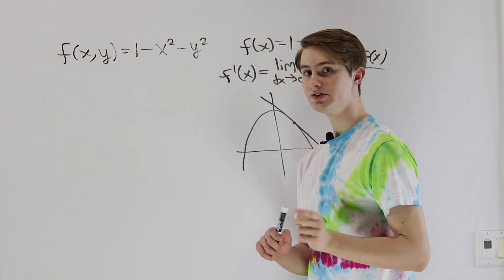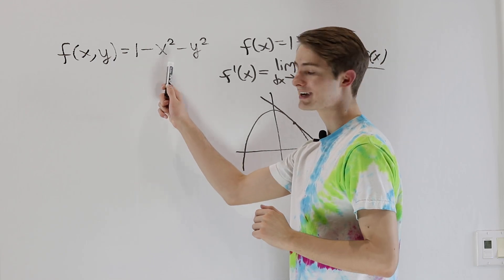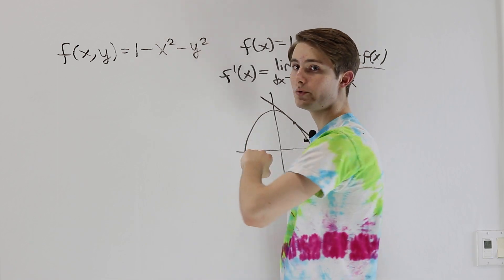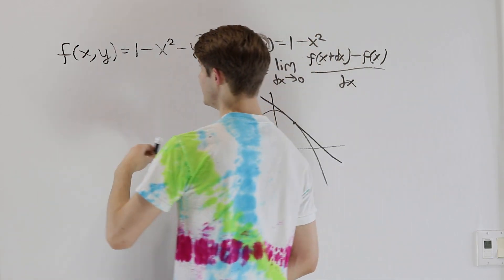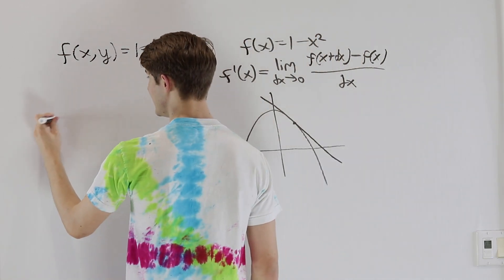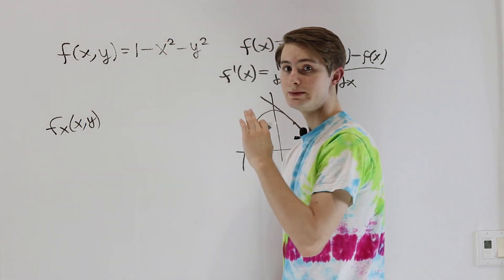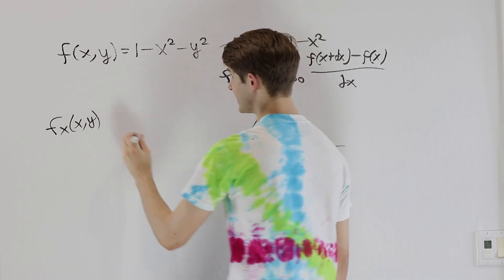So in this case, let's see what happens if we take our line to be the x axis. So we're only looking at changes of the x value, and we're leaving y as it is. In that case, we would write the derivative as f sub x of x, y, and this is called the partial derivative of f with respect to x.